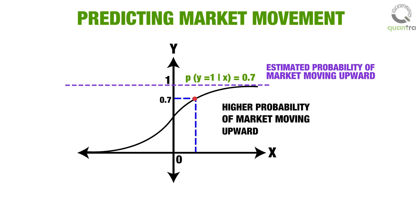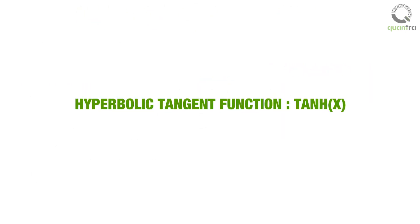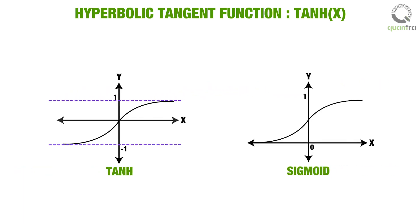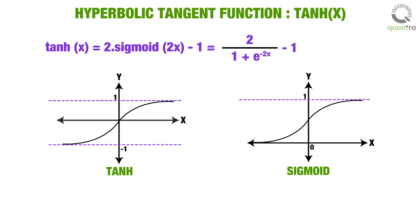The next mathematical function used in classification is the hyperbolic tangent function, or tanh. It is another mathematical function used to construct a binary classifier, and it is similar to the sigmoid function — it is S-shaped and bounded. Tanh maps the entire real axis into a bounded space between minus 1 and 1. The tanh and sigmoid functions are related by the following equation: tanh(x) equals 2 times sigmoid(2x) minus 1. Tanh is used in cases when we are interested in predicting minus 1 or 1, rather than 0 or 1.